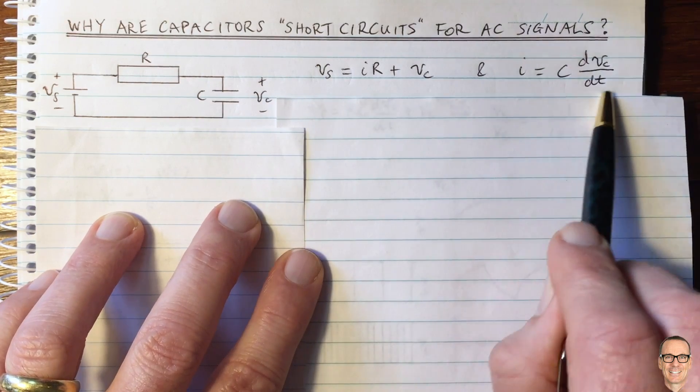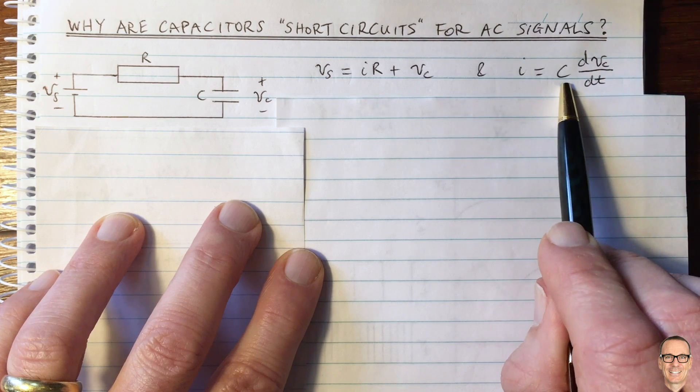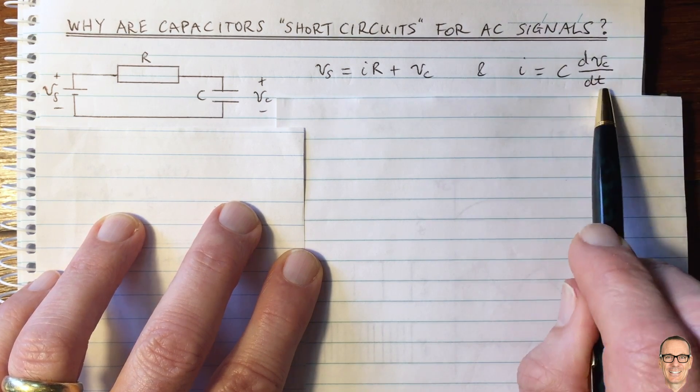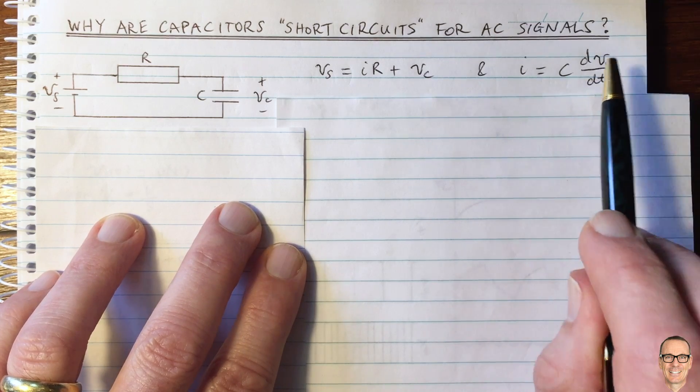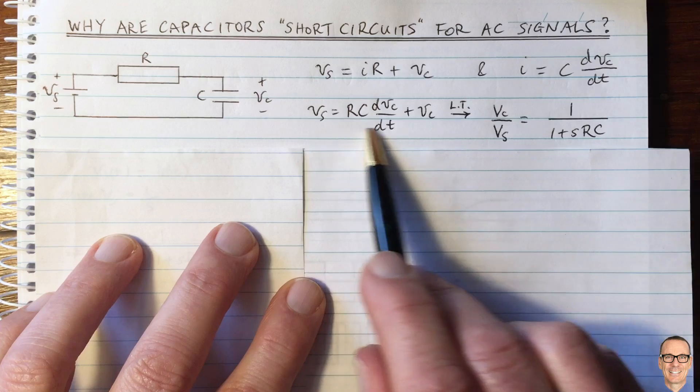We also have an equation for the current and the voltage in a capacitor. So the current is the capacitance times the derivative of the voltage with respect to time. Let's put that into this equation here and we can get this equation here.